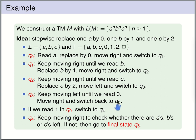State q3 walks back to the last replaced a (a 0): we keep moving left over already-replaced symbols and remaining letters until we see a 0, then move right and switch back to q0. If there are more a's, q0 replaces the next a by 0 and the process continues. Once we return to q0 and see a 1 (a replaced b), it means all a's have been replaced, so we switch to q4.